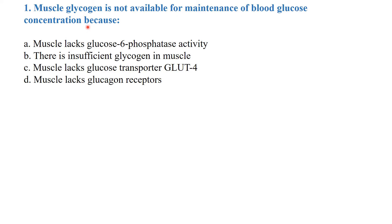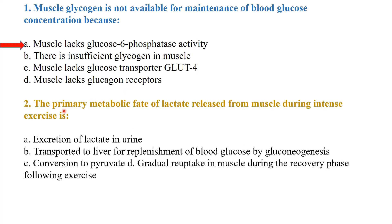Muscle glycogen cannot maintain blood glucose concentration. The best answer is: muscles lack glucose-6-phosphatase activity. Because muscle lacks glucose-6-phosphatase activity, it cannot release free glucose into the blood.